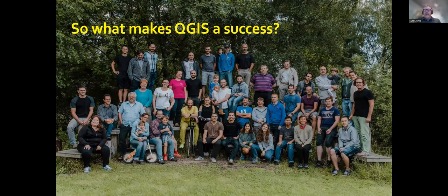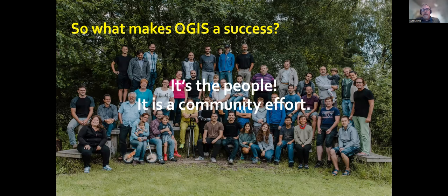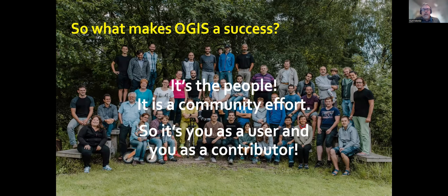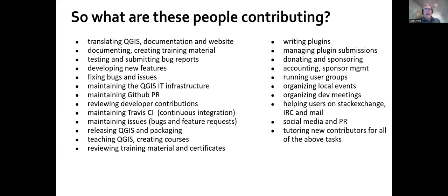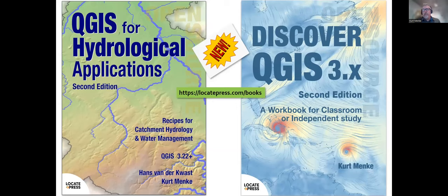What makes QGIS a success? It's the people — it's a community effort, a team effort. When you start using QGIS you become a user and part of the community by default. If you encounter a bug and don't report it, it may not get fixed. Everyone has a role. Contributions include maintaining the website, developing the software, teaching courses, and submitting bug reports. Personally, one thing I do is write books on QGIS. This has been a big year for me — I just had two books come out: QGIS for Hydrological Applications second edition with my co-author Hans van der Kwast, and Discover QGIS 3X, both through Locate Press.